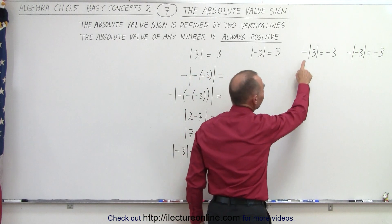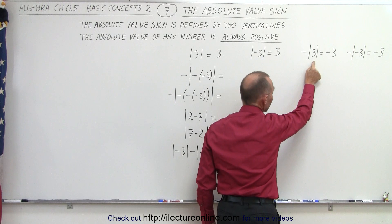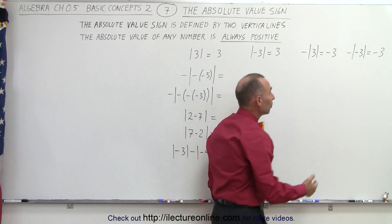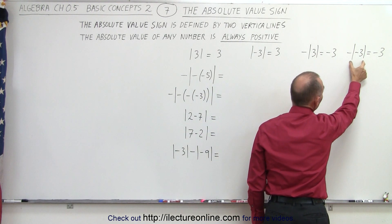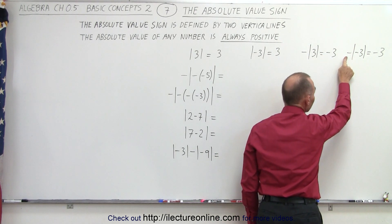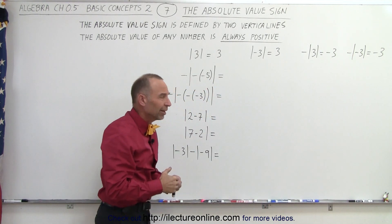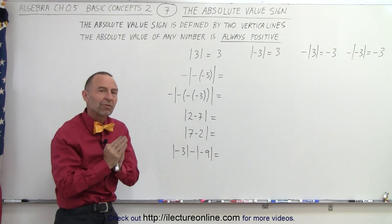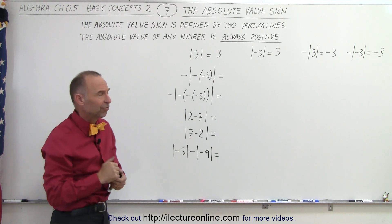But when you place a negative sign in front of the absolute value of 3, well, the absolute value of 3 is 3, but with a negative in front of it, it becomes negative 3. And when you place a negative sign in front of the absolute value of negative 3, we know the absolute value of negative 3 is 3, but placing a negative sign in front of it gives us negative 3 again. This is what makes absolute value signs a little bit tricky. We always want to take care of what's inside the absolute value signs first, and then deal with any negative signs in front of it afterwards.